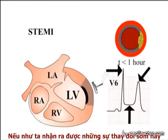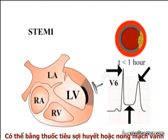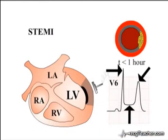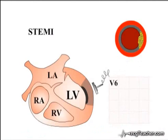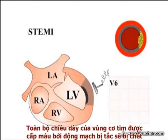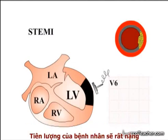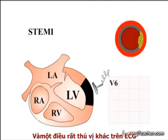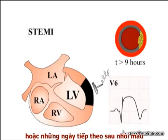If these early ECG changes are recognized and the vessel reopened using either thrombolysis or direct coronary angioplasty, the progression of the infarction can be halted in its tracks and myocardium at risk of death salvaged. If left untreated, however, the full thickness of the region of myocardium supplied by the occluded vessel may die. This is associated with a poorer outcome for the patient and an interesting ECG phenomenon developing between 9 to 12 hours after vessel occlusion or in the days following infarction.